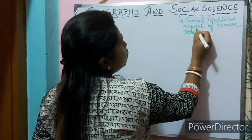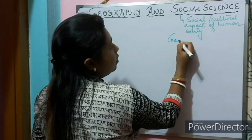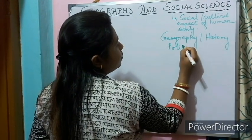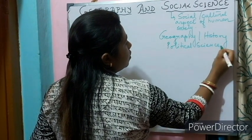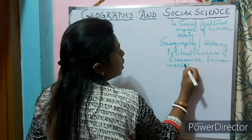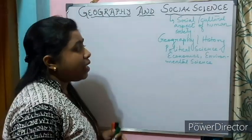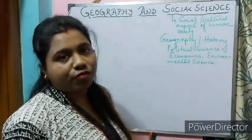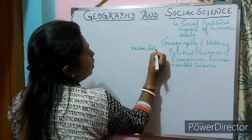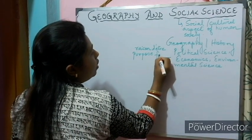Now, each social science has an interface with different branches of geography. For example, geography interfaces with history, political science, economics, and environmental science. We will see that all these social sciences are related to or interface with one branch of geography. Now each discipline has its own philosophy, meaning they have their own reason and purpose for existence.